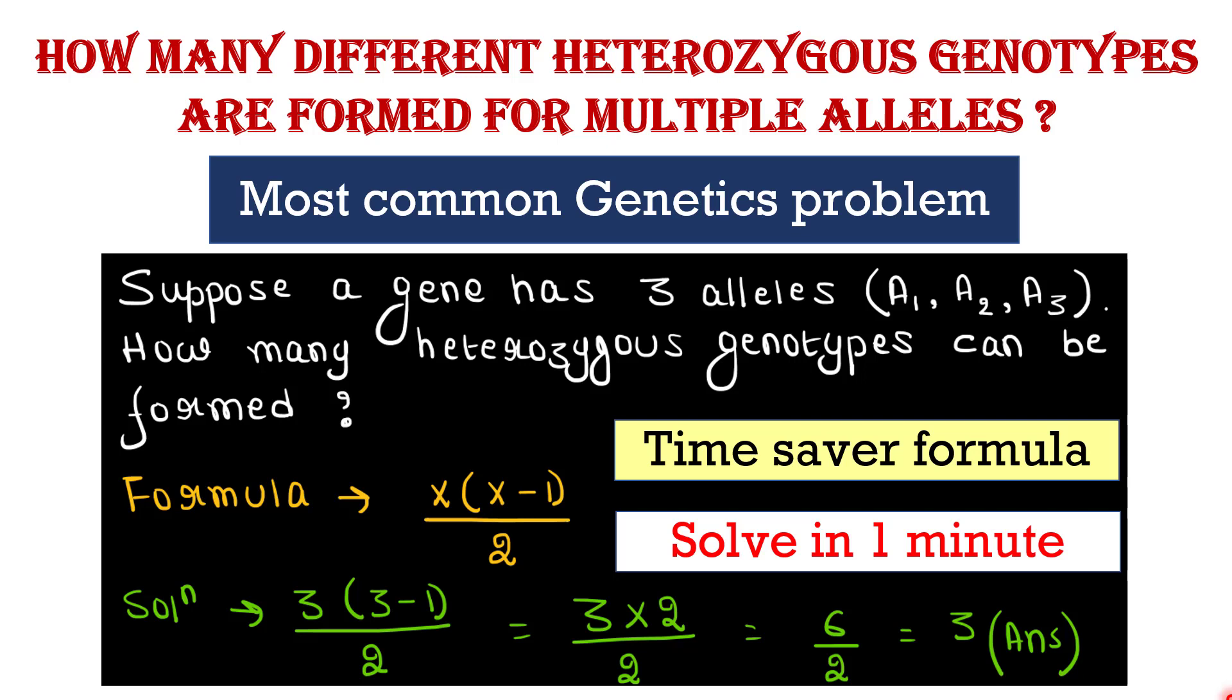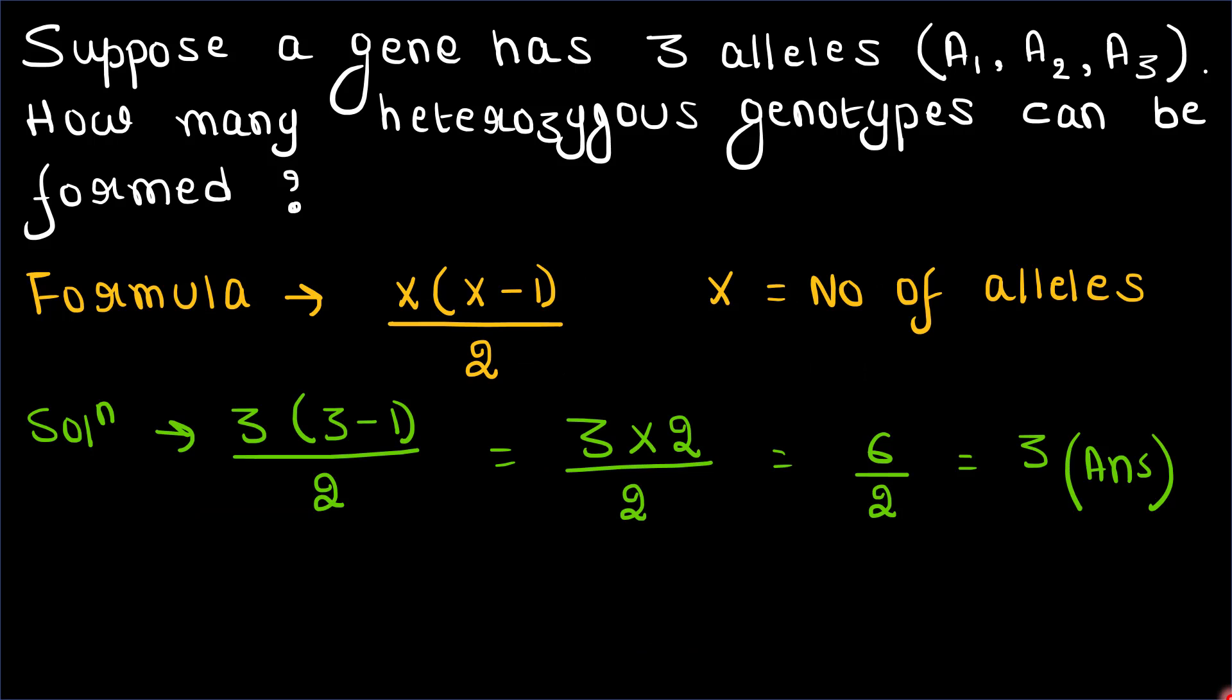We will see two examples. Here is the first example: suppose a gene has three alleles A₁, A₂, and A₃. How many heterozygous genotypes can be formed? The formula is x(x-1)/2, where x represents the number of alleles. Here we have three alleles, so just put this three in x, and here is the answer.